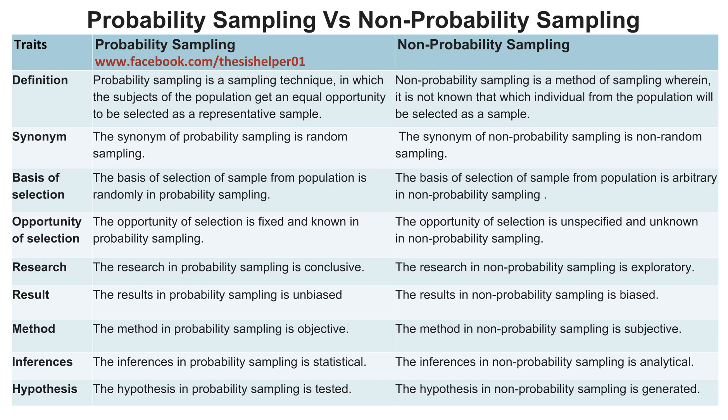The research in probability sampling is conclusive, whereas the research in non-probability sampling is exploratory.